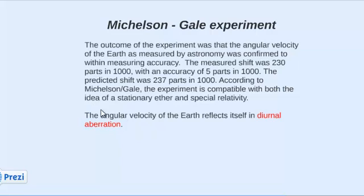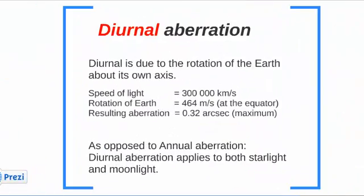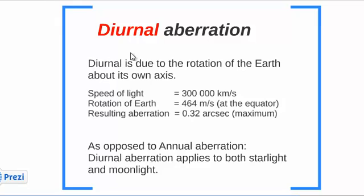This angular velocity of the Earth itself is reflected through diurnal aberration, calculated as follows. Diurnal aberration is due to the rotation of the Earth about its own axis. The speed of light is 300,000 km per second, the rotation of the Earth is 464 m per second at the equator, and the resulting aberration at the equator is 0.32 arc seconds. As opposed to annual aberration, diurnal aberration applies to both starlight and moonlight.